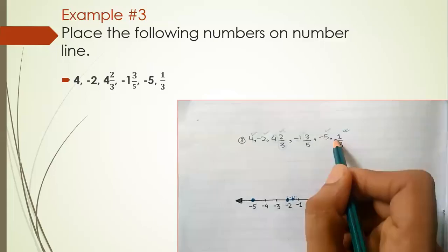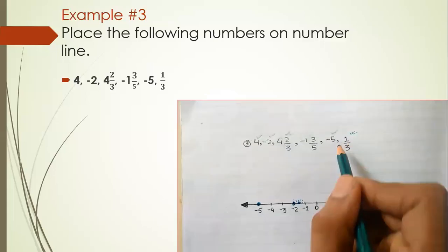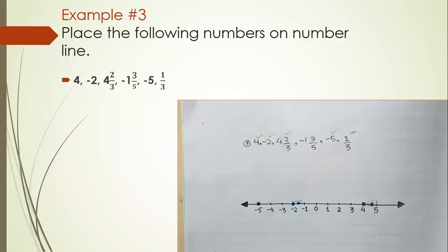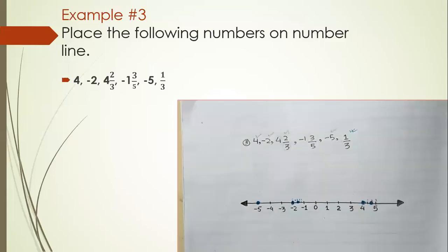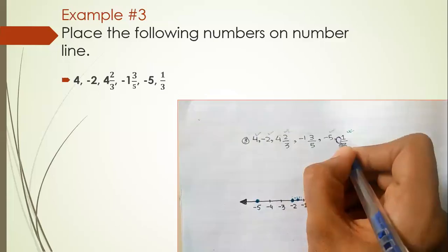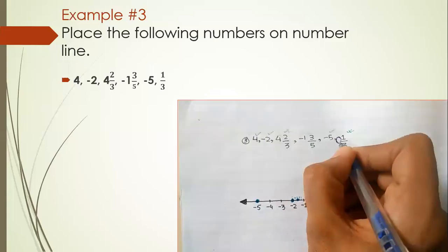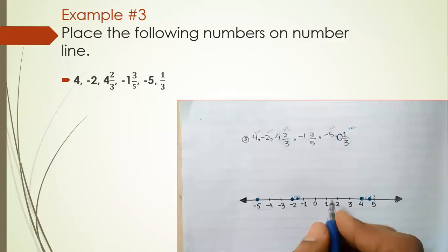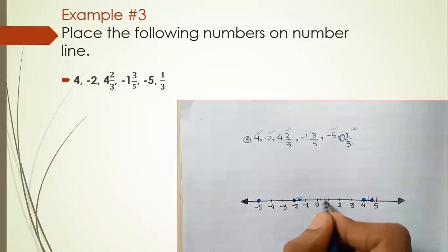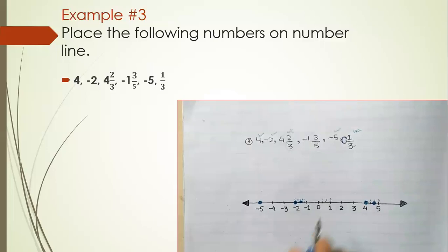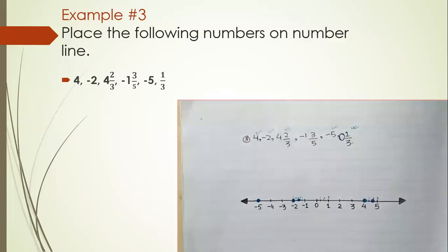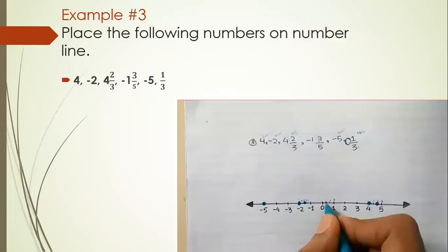The last one is one-third. There's no whole number here, so we write zero. Moving to zero, we break this portion into three equal parts — one, two, three — and mark on one.